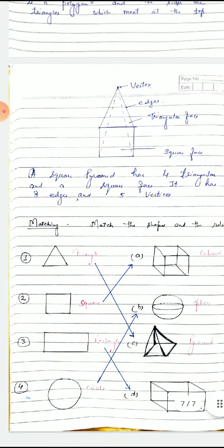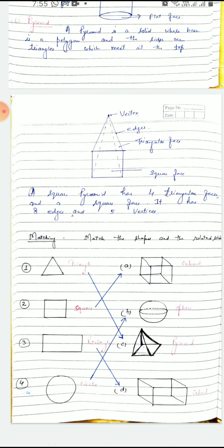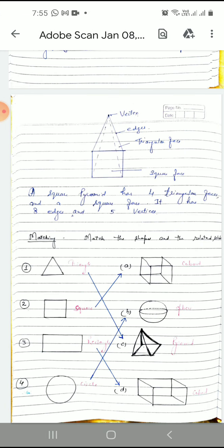Here is a matching for you. On your right side there are 2D shapes, and on your left side there are 3D shapes. So you have to match these shapes.